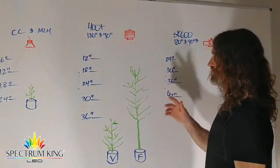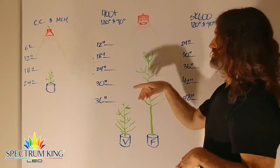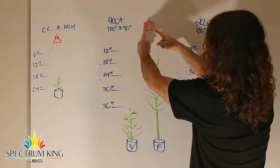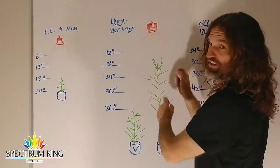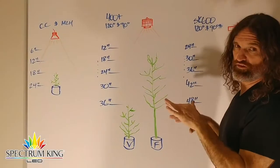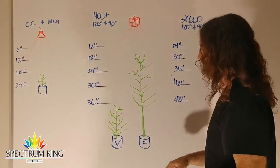Stepping over to the 400+, which comes in two versions - you have the 120 degree reflector or the 90, which is like that bell shroud that goes underneath it. They're hung at different distances during different parts of the plant cycle.